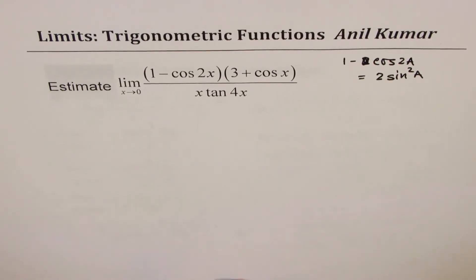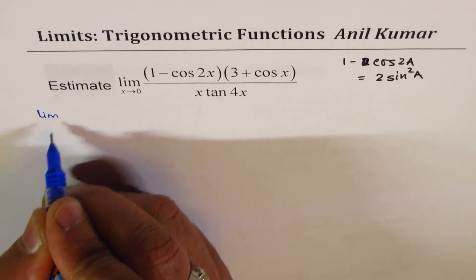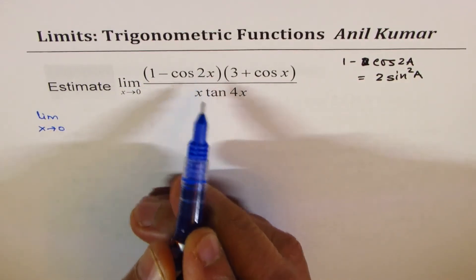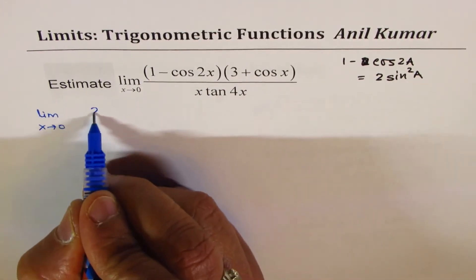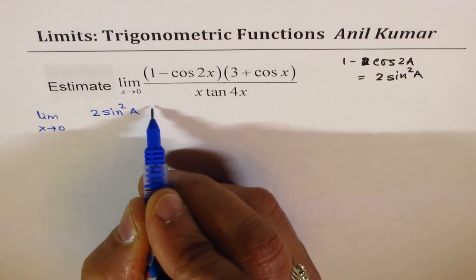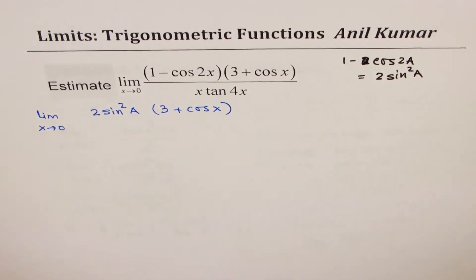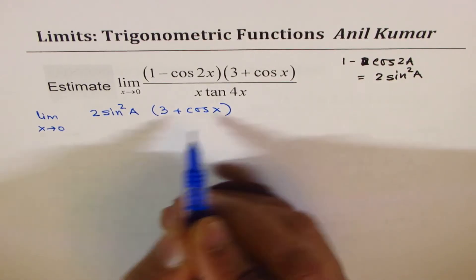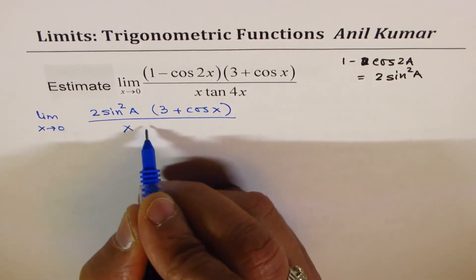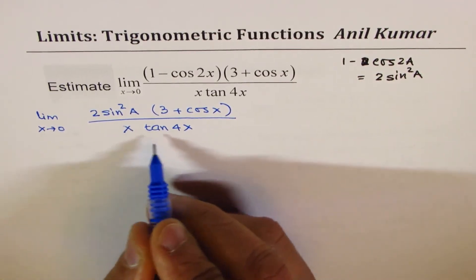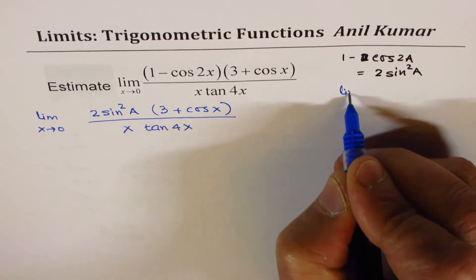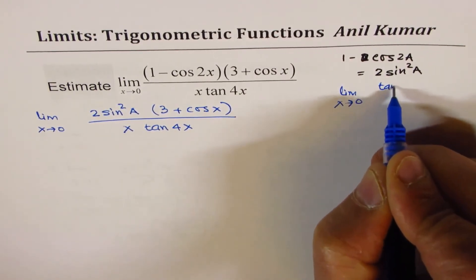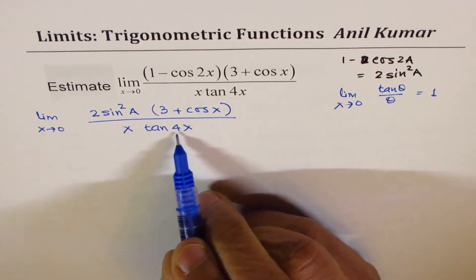I hope now it is clear to you — you can pause the video and answer the question. So let's do this substitution and solve. We have limit x approaches 0. Now, 1 minus cos 2x can be written as 2 sin squared x. We have 3 plus cos x in the numerator. We need not worry about cos x because cos 0 is 1. And in the denominator, we have x times tan 4x. We know that limit x approaches 0 of tan theta over theta is 1, so theta is 4x for us.